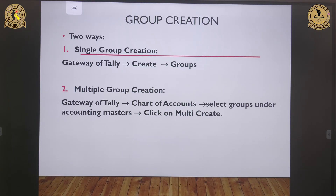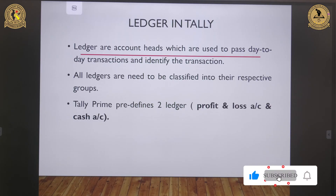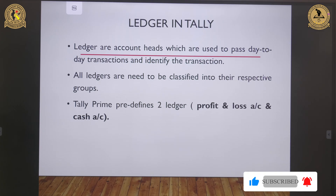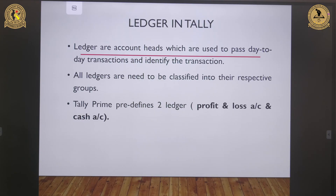Now let's understand the other important aspect, that is the ledger. Ledgers are considered the backbone of any accounting system and play a very important role in organizing and analyzing financial transactions. Ledgers are individual accounts where transactions related to a particular category are recorded. In Tally Prime, there are two predefined ledgers: the Profit and Loss account and the Cash account — we are not supposed to create these two, as they are already inbuilt.